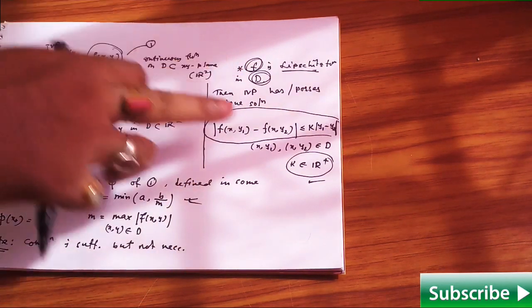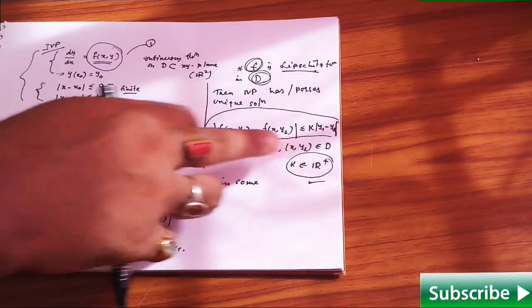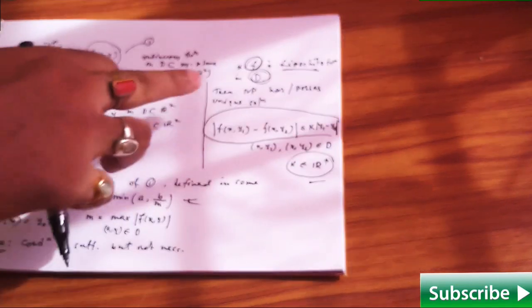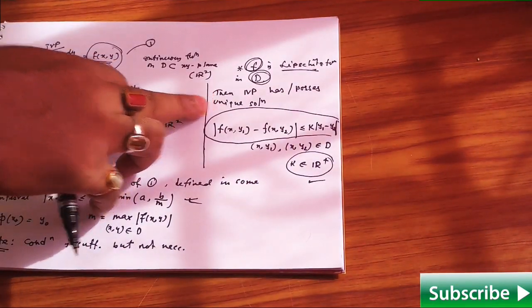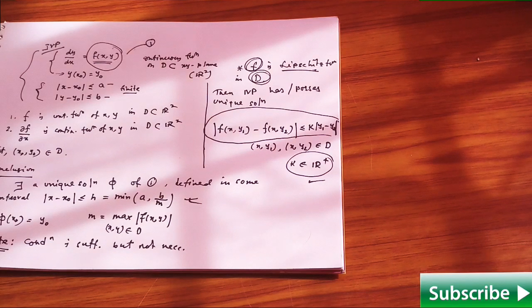If your f in that given domain satisfies this condition, then your initial value problem possesses a unique solution. That is another one-sided result.